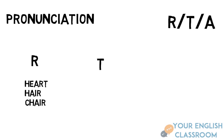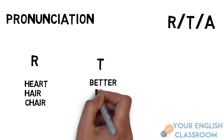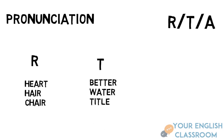In the middle of a word, T can be pronounced like a fast D in American English. For example: 'better', 'water', 'title'. British people say 'better', 'water', 'title' — notice the T is stronger.